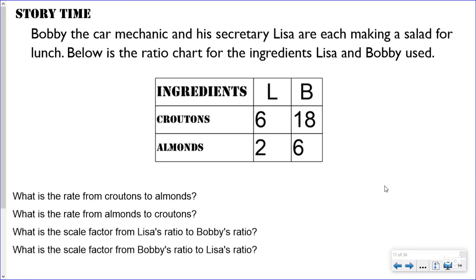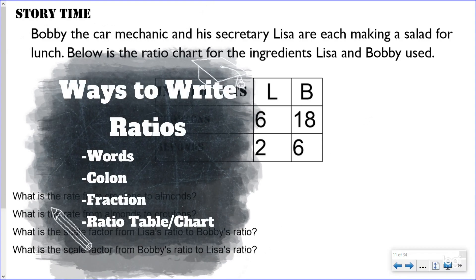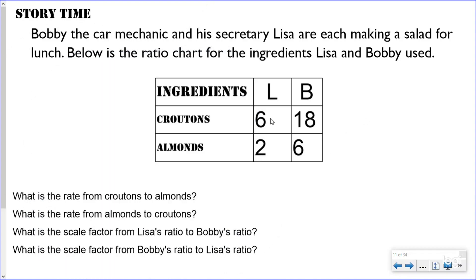You might say, 'Bobby, I don't see a ratio here.' This is a new way to write a ratio — a ratio table. This is the same as writing six to two as a fraction, and right here it's saying 18 to six.